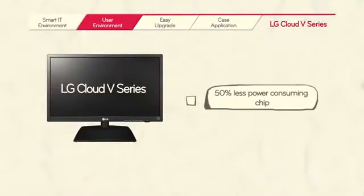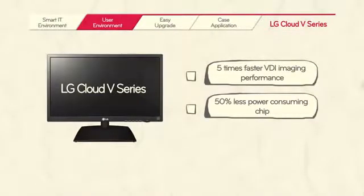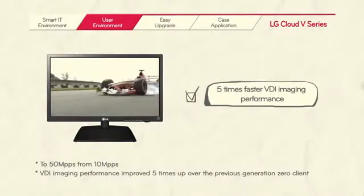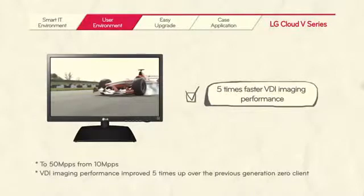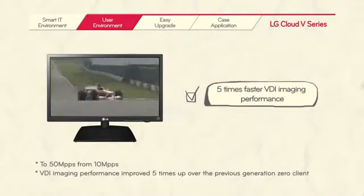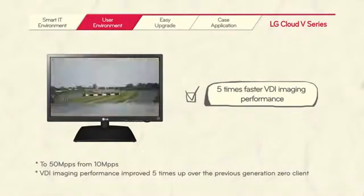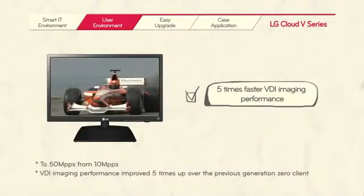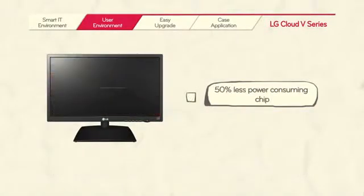The LG Cloud V Series uses Teradici's next-generation chipset, the Terra 2. There are two major improvements compared with the Terra 1 chipset. First, the Terra 2 chipset has faster VDI imaging performance. Terra 2 chipset visibly increased the speed of VDI imaging performance, improving around five times from the previous generation Terra 1 chipset.